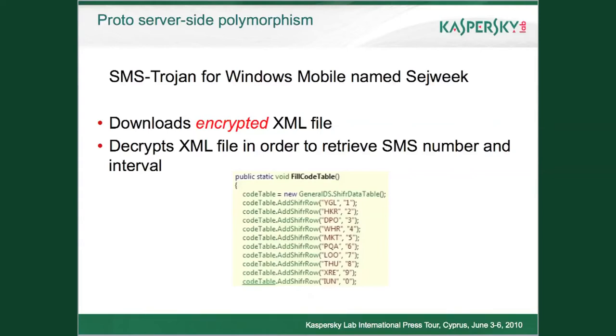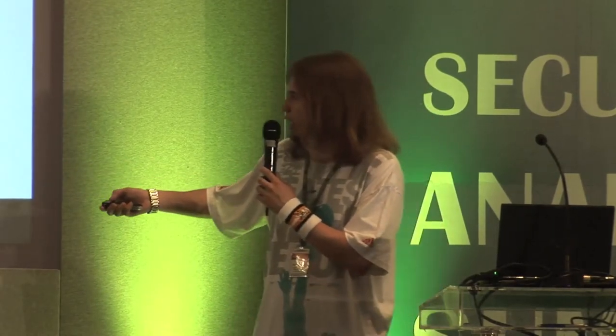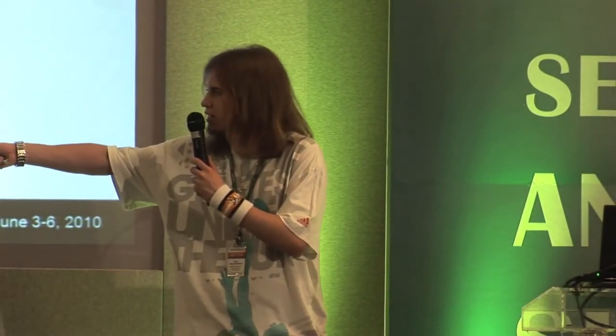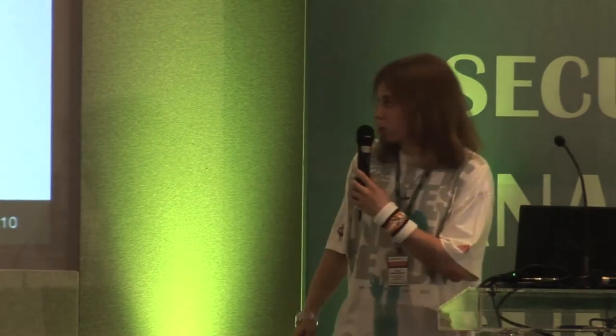The next interesting technology is proto server-side polymorphism. A good example is an SMS Trojan for Windows Mobile named Seywick. This Trojan downloads an encrypted XML file containing a phone number and send interval. Inside the Trojan is a special decryption table in its code. After decrypting it, the Trojan receives an SMS number and SMS interval, then starts sending messages to that premium rate number with the specified text every 22 seconds. One message to that premium rate number costs the user about $5, meaning an infected user can lose a significant sum of money.